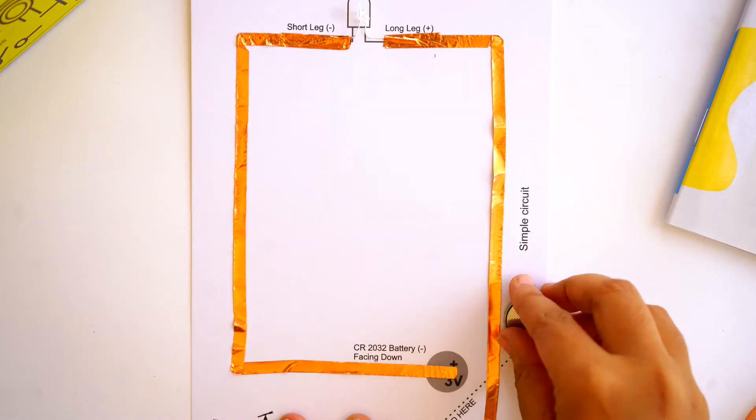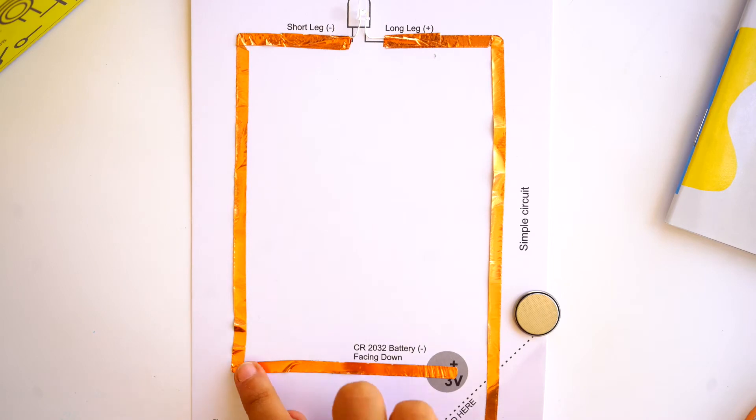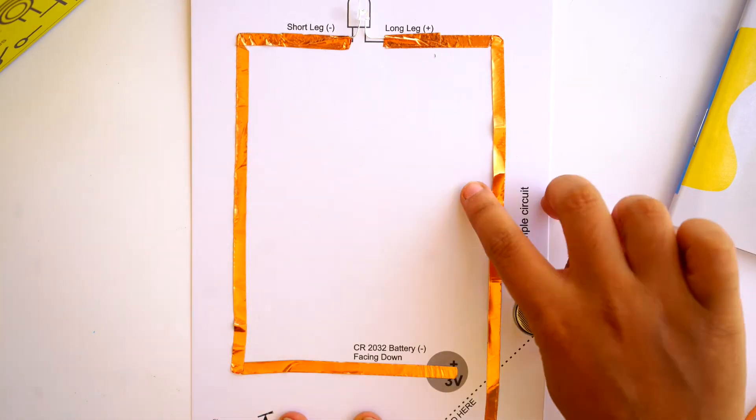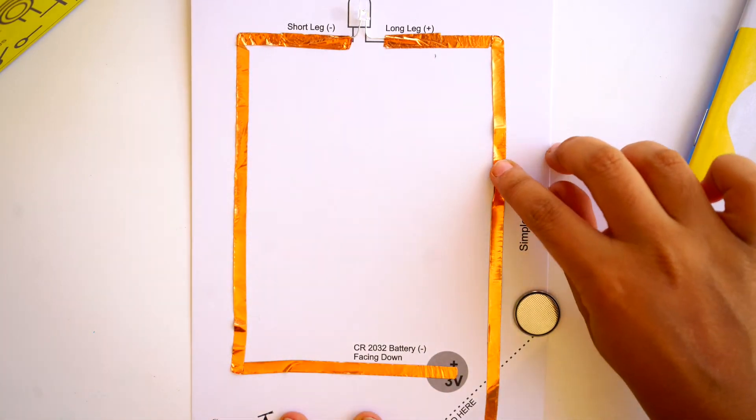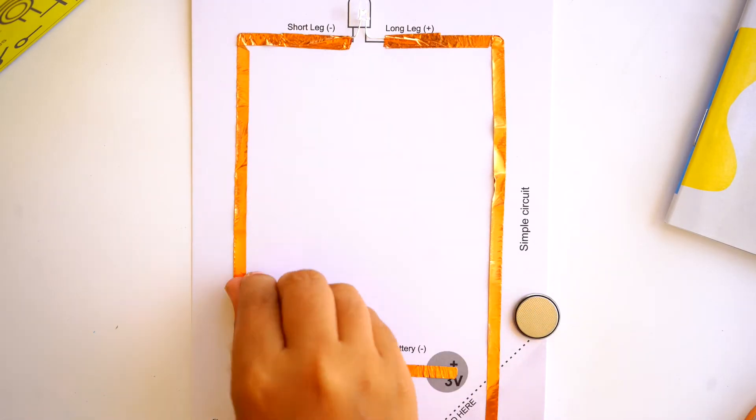Smooth any wrinkles down in the copper using your finger. Look for any cuts or breaks in the copper tape. If the copper tape has wrinkles, the circuit won't get completed.